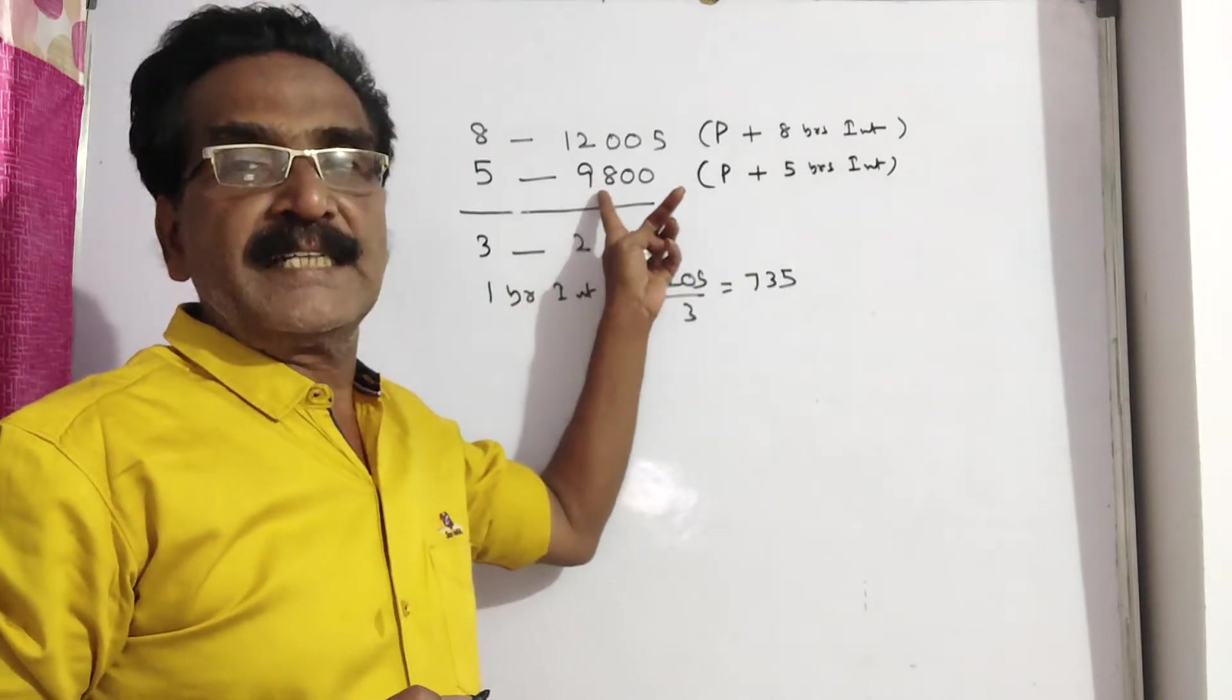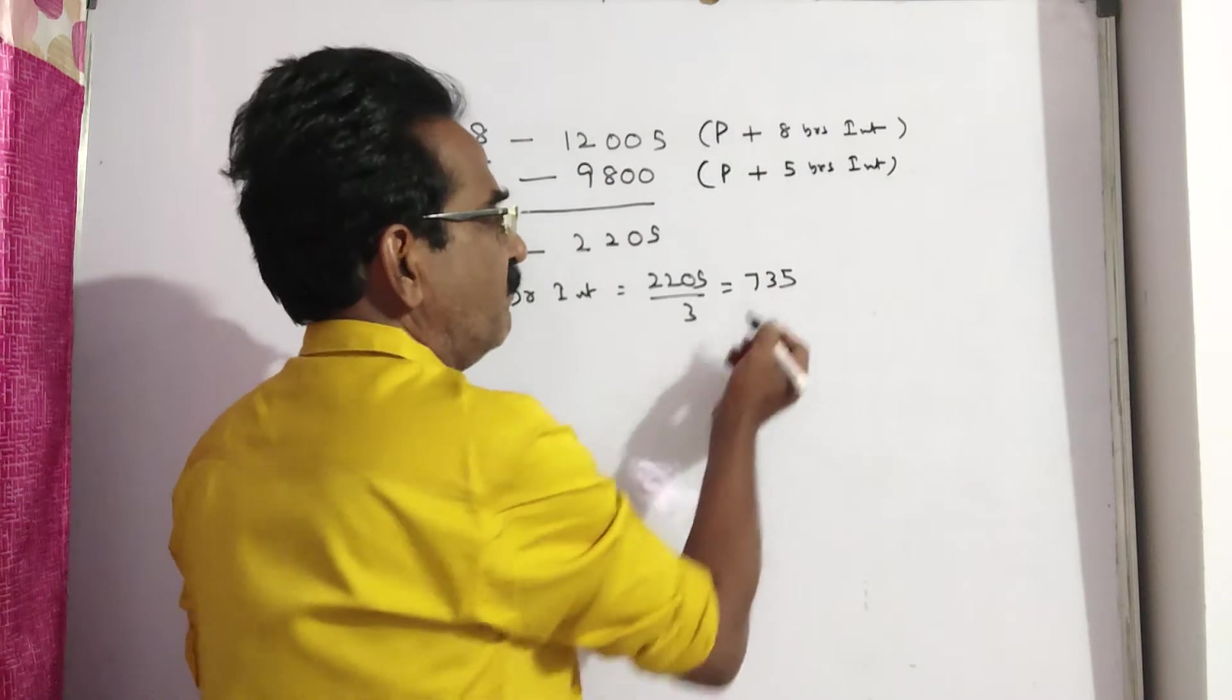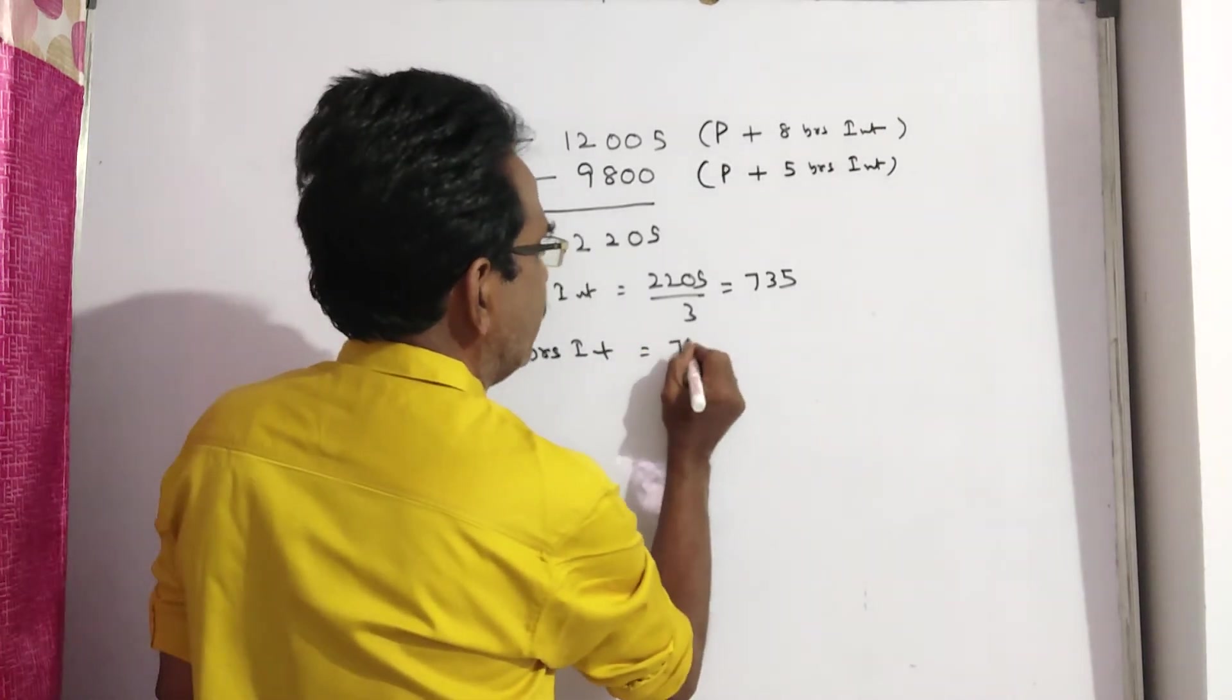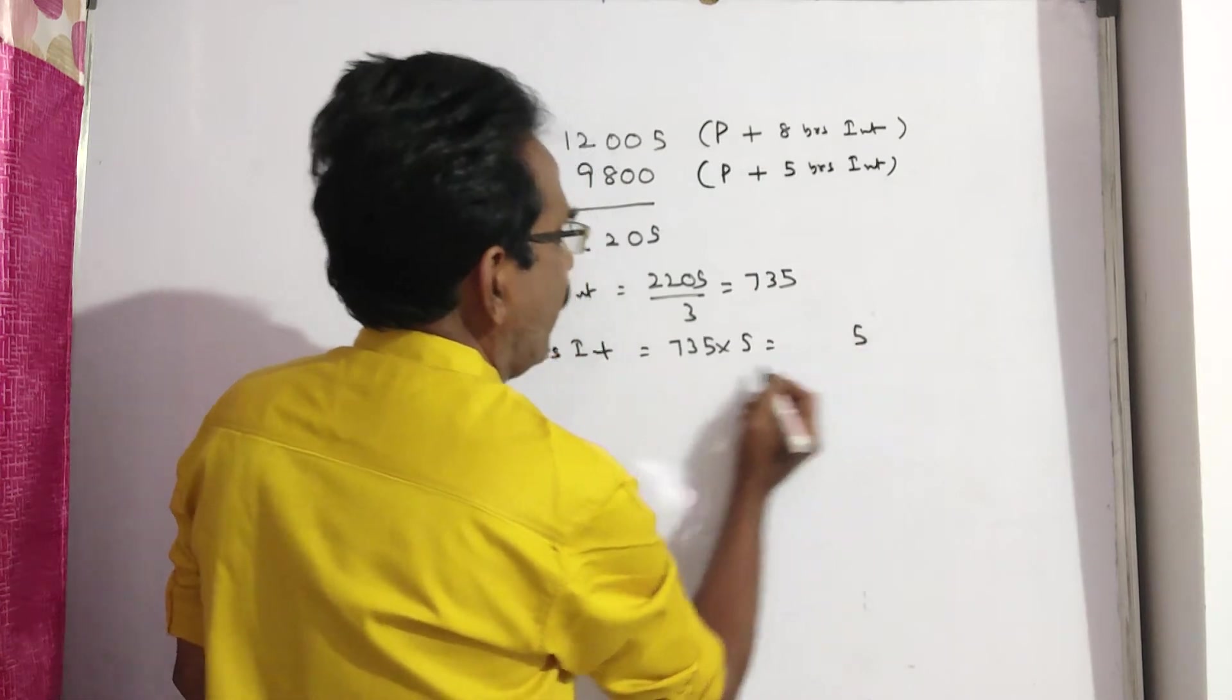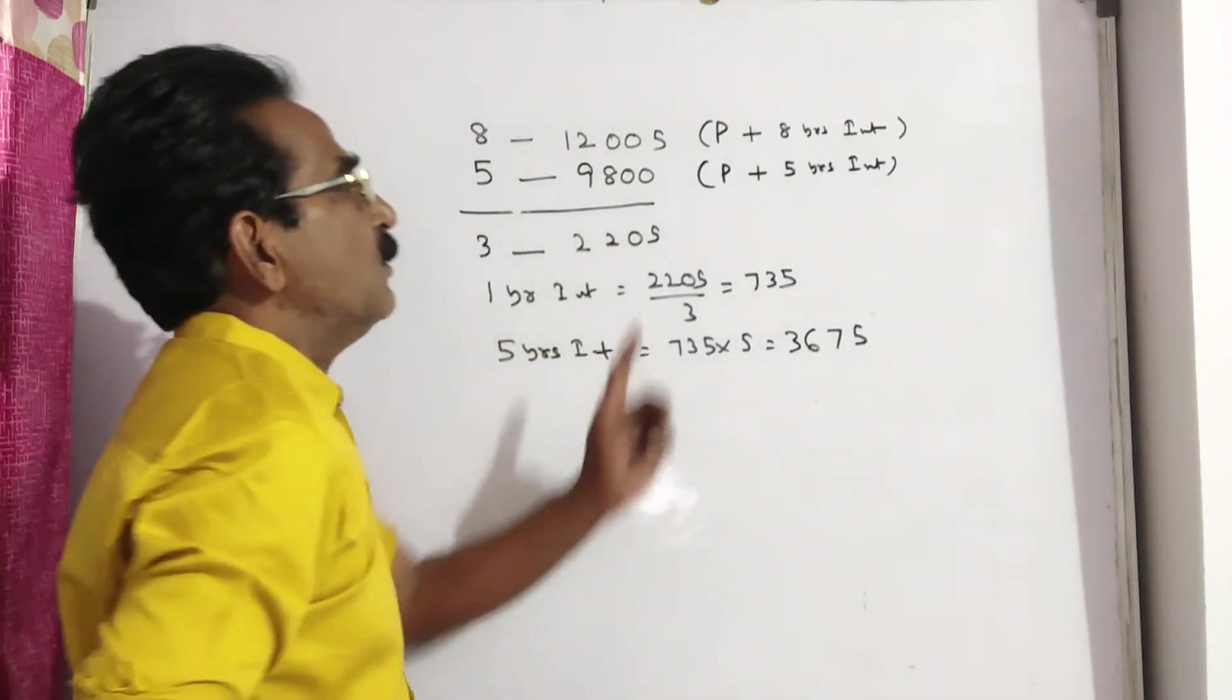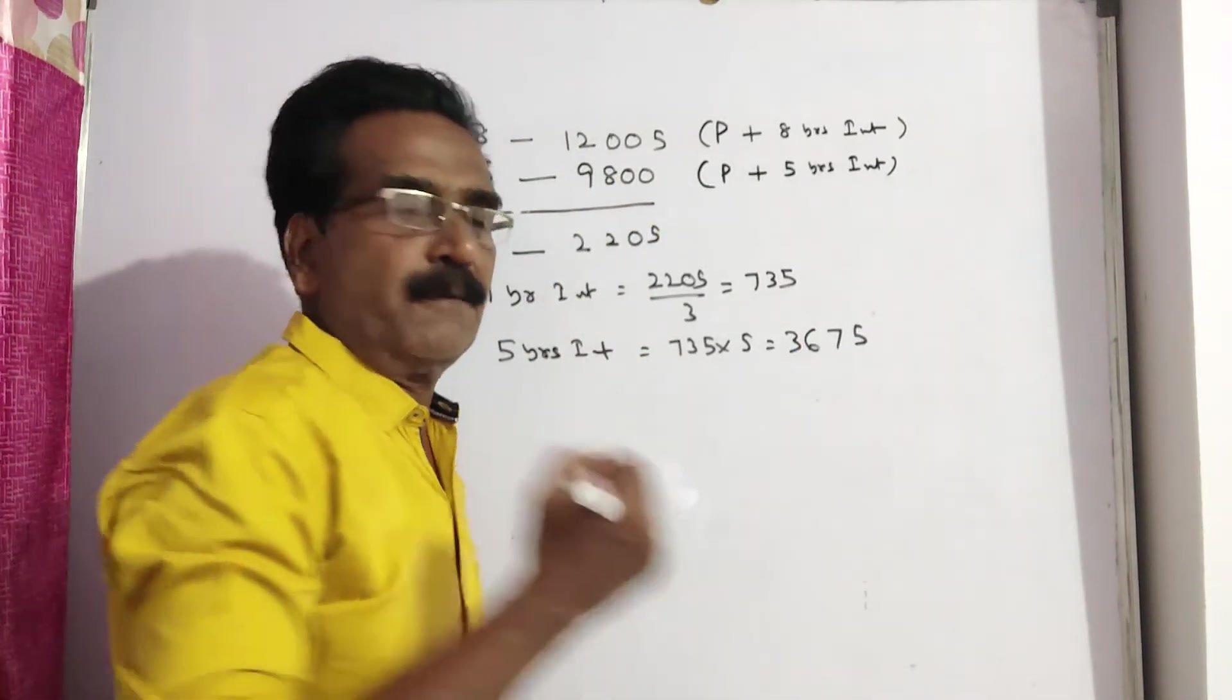This 9800 includes principal plus 5 years interest. 1 year interest is this much, and 5 years interest is equal to 735 into 5: 5 5's 25, 5 3's 17 and 5 7's 36. So this 9800 includes 3675 rupees interest.